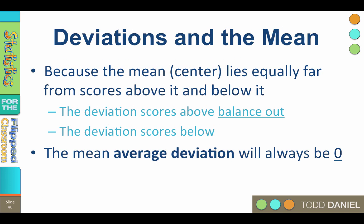The reason that the mean was at the center of our distribution in the first place is because mathematically it lies equally far from all the scores above it and below it.